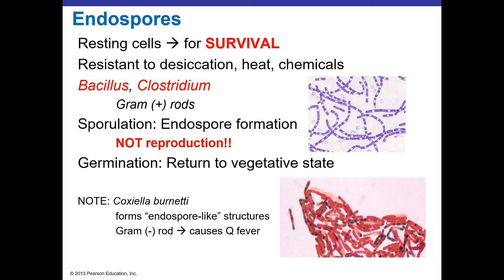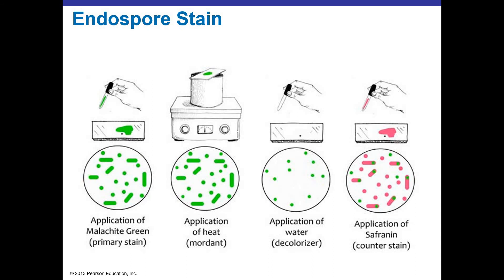In the endospore stain, the lower right-hand panel shows red vegetative cells and green endospores that look like little green beans. Malachite green is used as the primary stain and must be heated into the cells and spores — a process called mordanting — which makes it permeate into the spore where it gets trapped. To decolorize, you only need water, which washes out the dye from the vegetative cell, leaving just the green endospores. Safranin is then used as a counterstain to give the red vegetative cells, making the endospores easily visible.